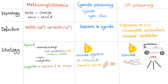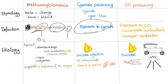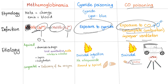Definition: Methemoglobin — instead of normal hemoglobin, which is ferrous (Fe2+) and carries O2, methemoglobin is ferric (Fe3+). The ferric is hysteric; it cannot bind oxygen. Cyanide poisoning is exposure to cyanide. CO poisoning is due to exposure to CO from incomplete combustion, which results from improper ventilation. With proper ventilation, you would oxidize CO to carbon dioxide, which is not toxic.